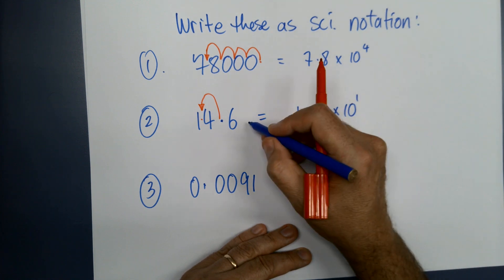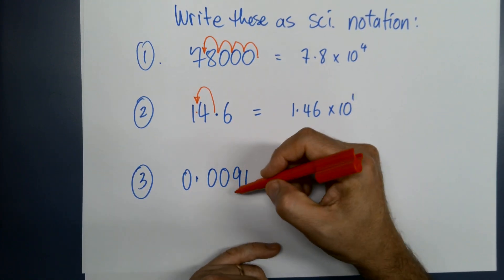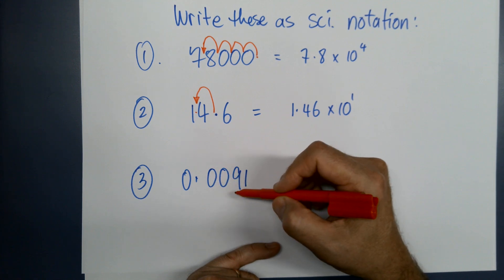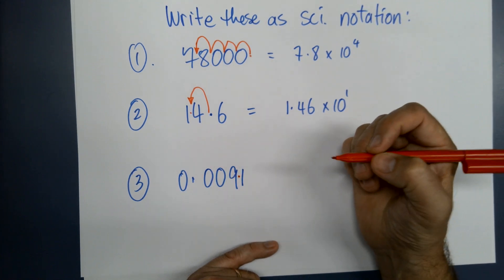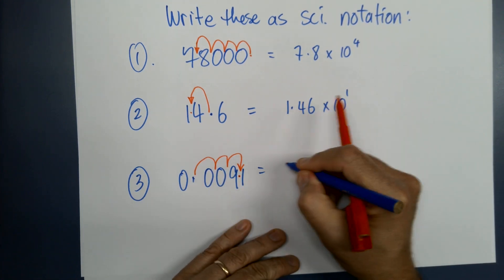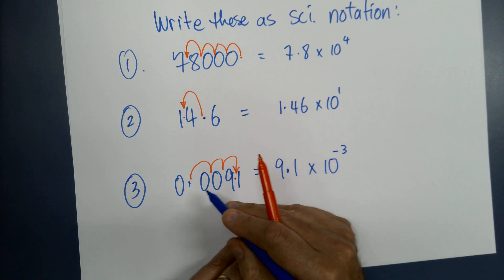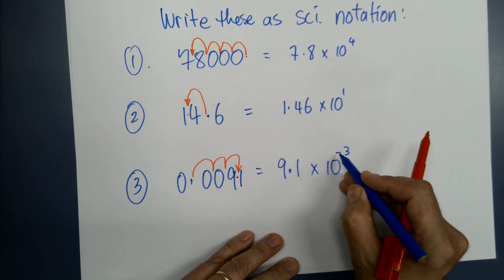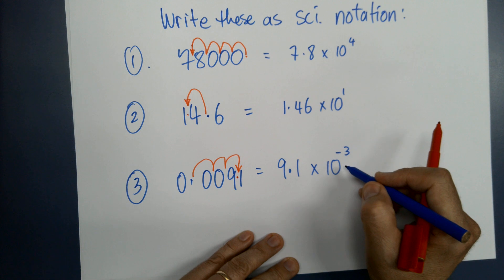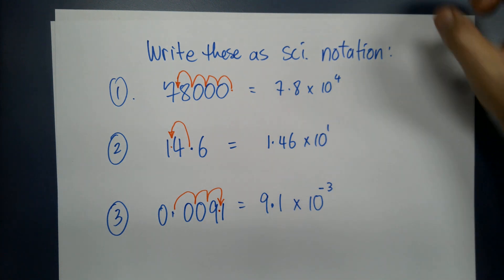You wouldn't normally use scientific notation for 14.6, but just to prove you can do it with any number. For 0.0091: I'm going to have a negative power because this is a tiny number. My decimal point needs to end up after the 9 — one, two, three — so that's 9.1 times ten to the negative three. It's three jumps and a small number, so negative three. That's how you write a regular number as scientific notation — you're now equipped to do the first page of the booklet.